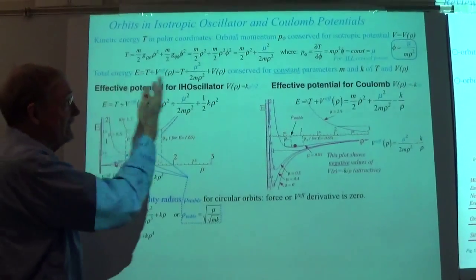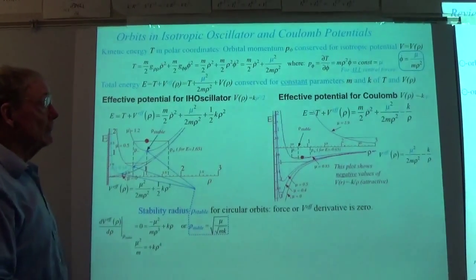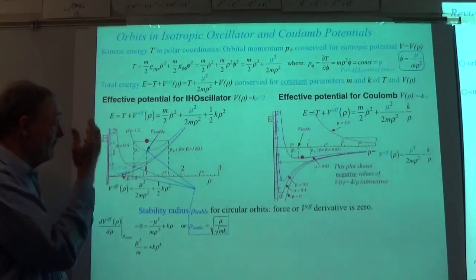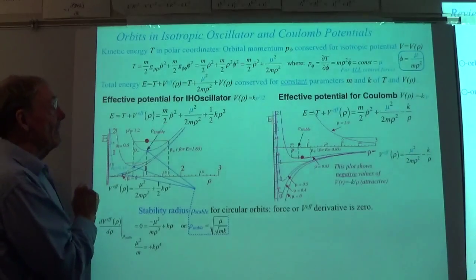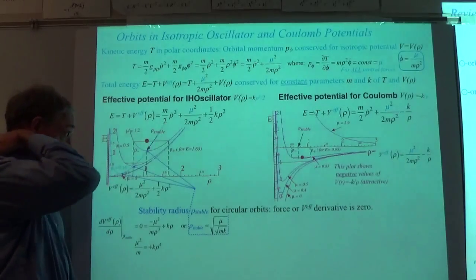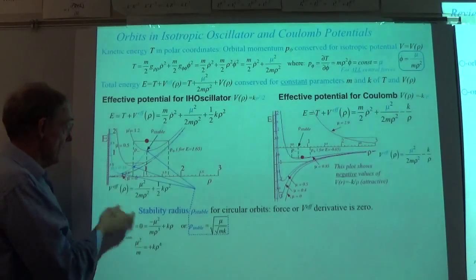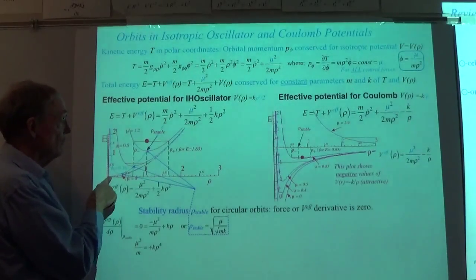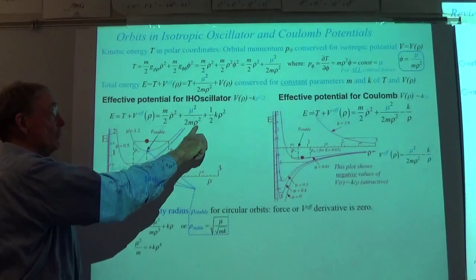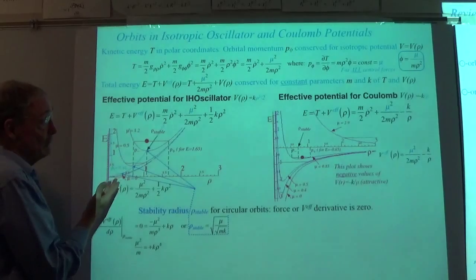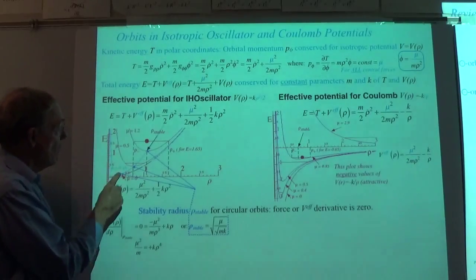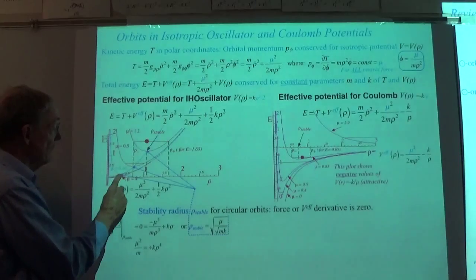Let's remember the steps when doing any sort of effective potential calculation. The first thing you'd like to find is the bottom of the effective potential. With the oscillator, if there's no angular momentum, the bottom is at the origin. But if you turn on any angular momentum, you get the inverse ρ² centrifugal barrier that blows up. There is a point — just like for the Coulomb — where you're at equilibrium. If you put the particle there, it sits there, meaning it's just orbiting at that radius.